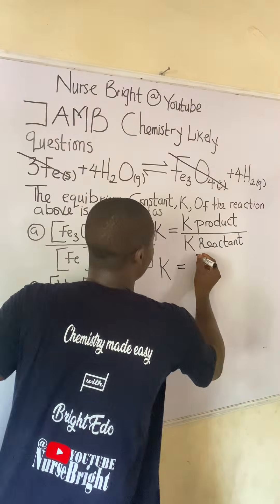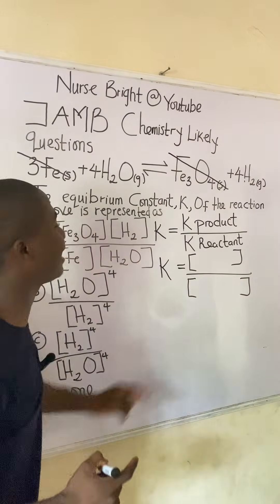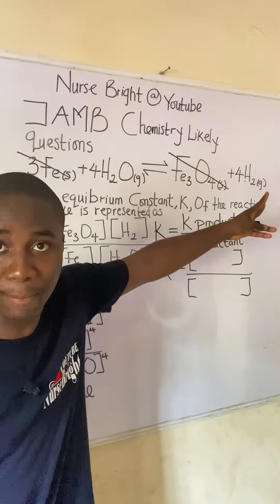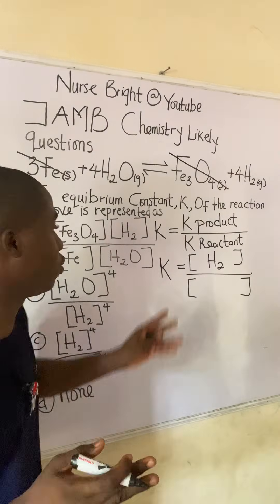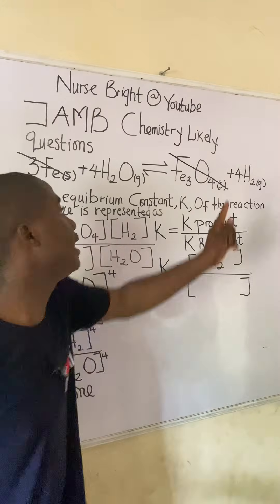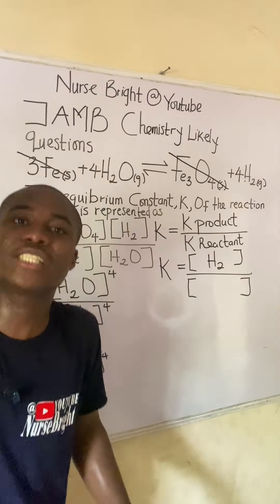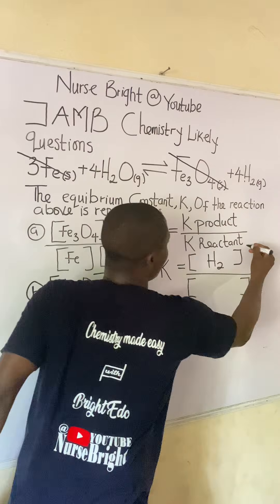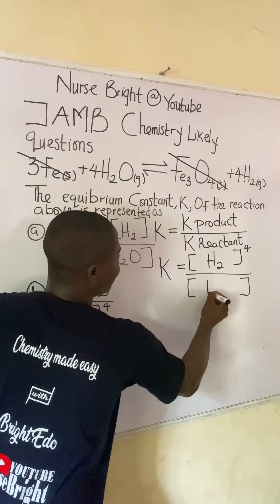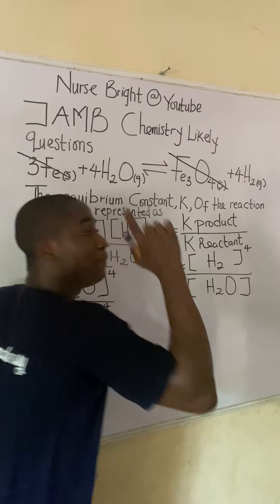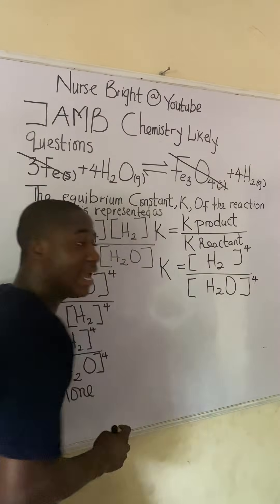You write them in brackets. Bring out a bracket for the product side, divided by a bracket for the reactant side. For the product, this is hydrogen gas H₂ — don't write the number in front of it, just write the element or compound. The coefficient, which is the number next to that element or compound, should be raised to the power. Since it is four, H₂ is raised to the power of four. For the reactant, this is water H₂O, and its coefficient of four is also raised as a power, so it becomes H₂O to the power of four.